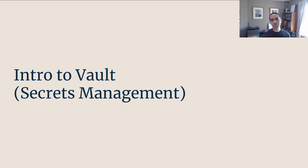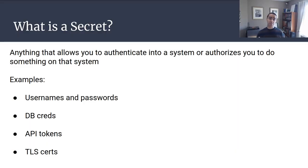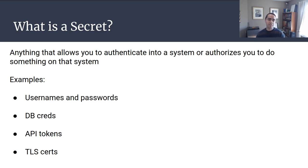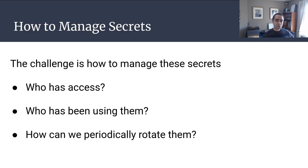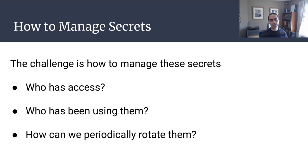Vault solves a secrets management problem. A secret is anything that allows you to authenticate into a system or authorizes you to do something on that system. Examples of secrets are usernames and passwords, database credentials, API tokens, and TLS certificates. The challenge is knowing who has access to these secrets, what they did with them, and having an audit trail. You also need to periodically rotate secrets — expire them and create new ones in case of a breach.